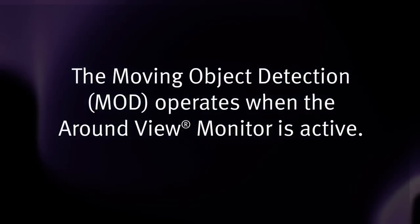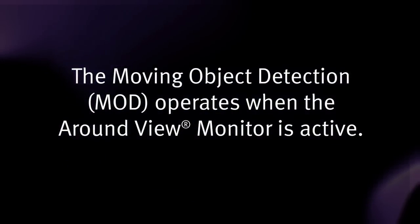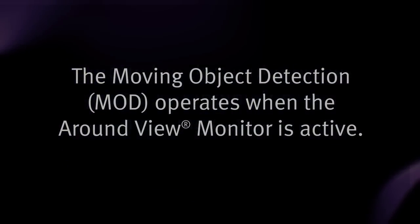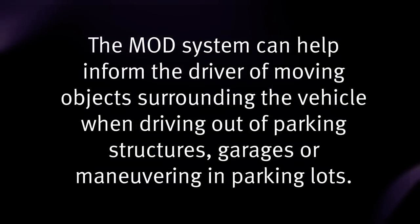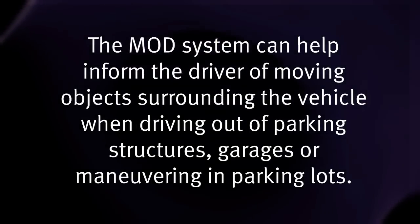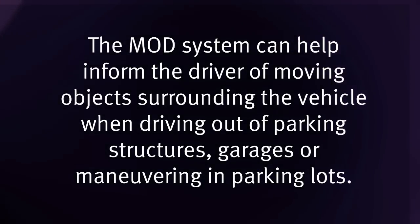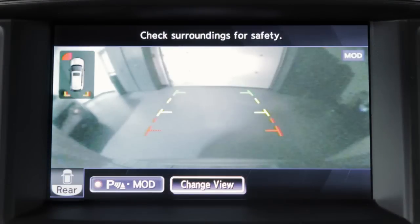The moving object detection system operates when the Around View Monitor is active and can help inform the driver of moving objects surrounding the vehicle when driving out of parking structures, garages, or maneuvering in parking lots. A blue MOD icon is displayed on the screen when the MOD system is operative, and a grey MOD icon is displayed when the MOD system is not operative.